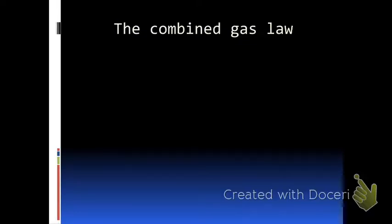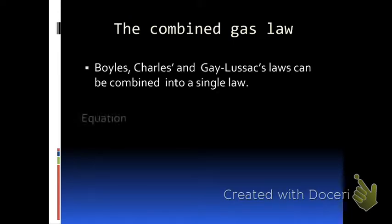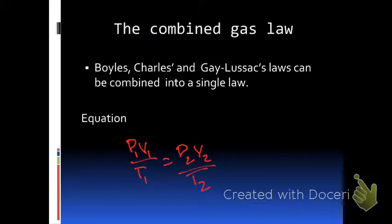To summarize: the relationship between pressure and volume is indirect; the relationship between volume and temperature is direct; and the relationship between pressure and temperature is also direct. When it comes to equations, instead of remembering three separate equations, we combine all the laws into the combined gas law. The equation is P1V1 over T1 equals P2V2 over T2. You can solve any problem relating to the three laws using this single combined gas law.